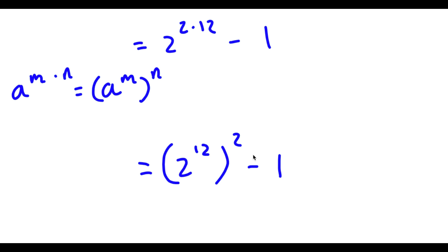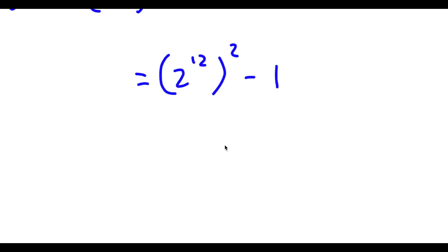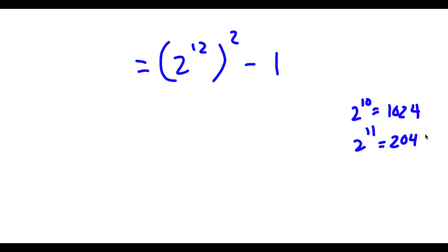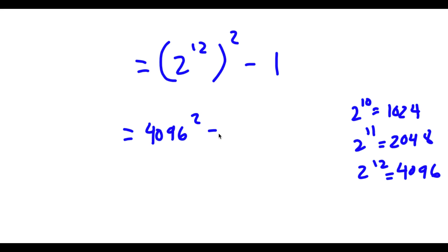Now I have this minus 1. Let's go ahead and calculate the value of 2 to the power of 12. Well, we know that 2 to the power of 10 is equal to 1024. So 2 to the power of 11 is double of 1024, which is 2048. So now I have 4096 squared minus 1.